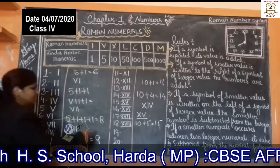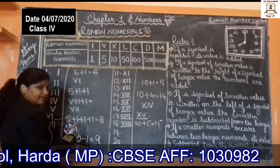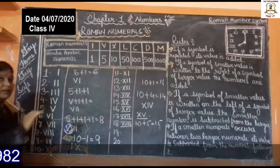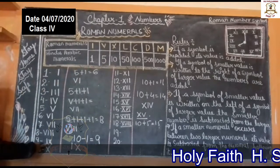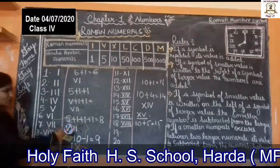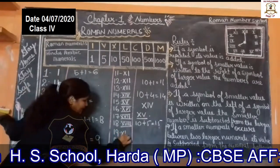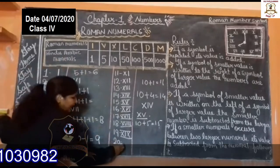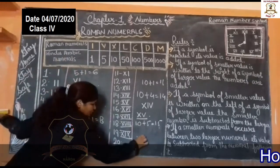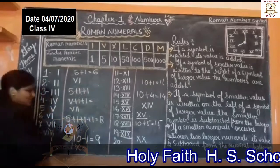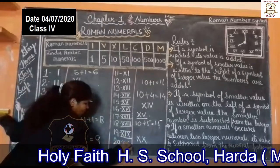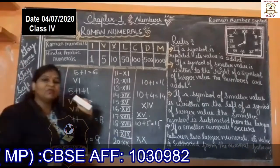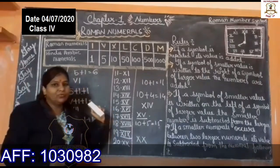19: again, 10 plus 9. The symbol of 9 we already learned, so 10 plus 9 gives us XIX. And 20 means 10 plus 10, so this is the symbol of 20: XX. Students, I hope you understood how to form Roman numerals from 1 to 20.